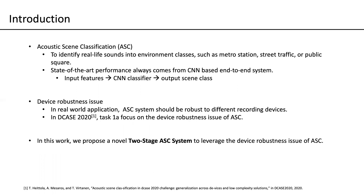In this work, we focus on Acoustic Scene Classification, the ASC task. This task is to identify real-world sounds into environmental classes, such as metro stations, street traffic, or public square. Nowadays, state-of-the-art ASC systems are built by CNN-based end-to-end systems — that means for each input feature, it will be fed into the same classifier and get the output prediction of the same class. As for the ASC system, device robustness is a critical issue. Usually in real-world applications, our ASC system should be robust enough to different recording devices. In DCASE 2020 Task 1A, the focus is mainly on the device robustness problem of the ASC system. In this work, to address the device robustness issue, we propose a novel two-stage ASC system.